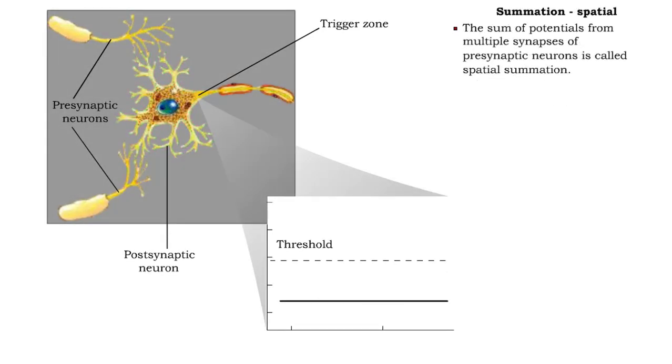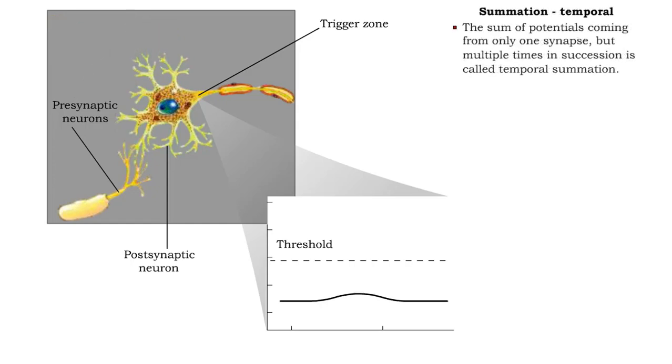Spatial summation results from the effect of potentials coming from many different synapses. Temporal summation results from the effect of potentials coming from one location or synapse, but many times in succession.